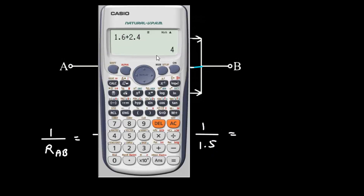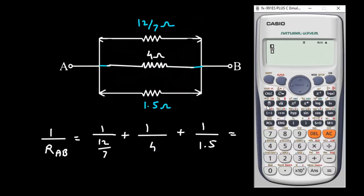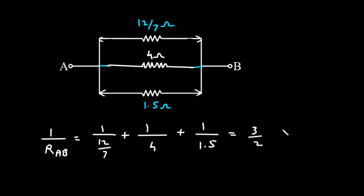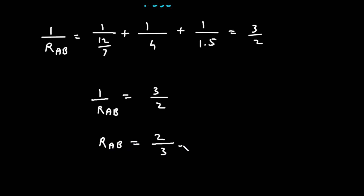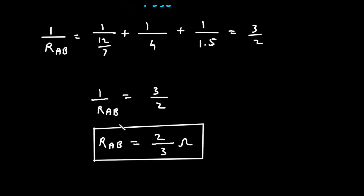Now, if we solve this in a calculator: 1 upon (12/7) plus 1 upon 4 plus 1 upon 1.5, it will be 3 by 2. So 1 upon RAB equals 3 upon 2, therefore RAB is equal to 2 divided by 3 Ohm. So this is how we can find the value of equivalent resistance.